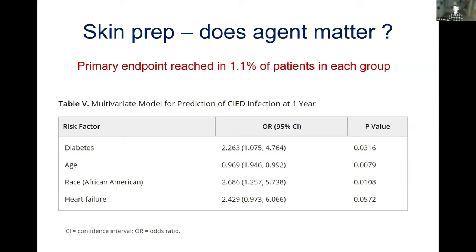The strongest predictors of infection from that study were diabetic status, race — African Americans were 2.6 times as likely to get a device infection as Caucasians, possibly related to broader health disadvantages — and a history of heart failure, which predicts device infection possibly because heart failure patients are more likely to end up with an ICD or CRT, which in itself is associated with higher infection risk.